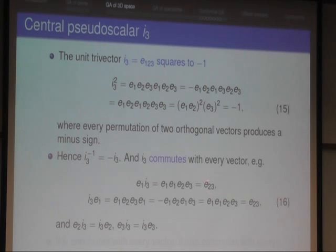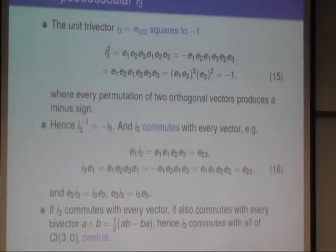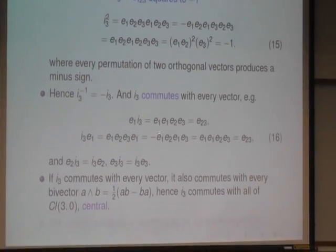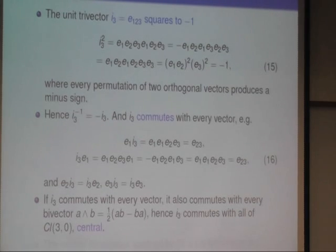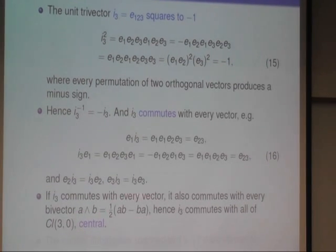And then we compute the product of, for example, vector e1 with i3, and we find e2 times e3, and the two other basis vectors which we have, we find they commute with this tri-vector. That's a very nice property because it shows we have another element here, i3, and it commutes with every vector, and because, for example, a bi-vector is also a product of vectors, therefore, i3 also commutes with a bi-vector because it commutes with a and with b. So it commutes with every element in the algebra, and that's called central.